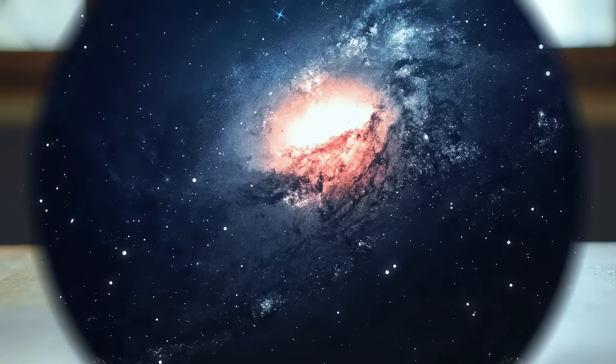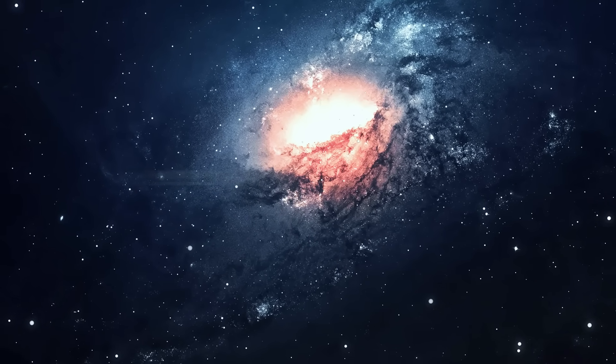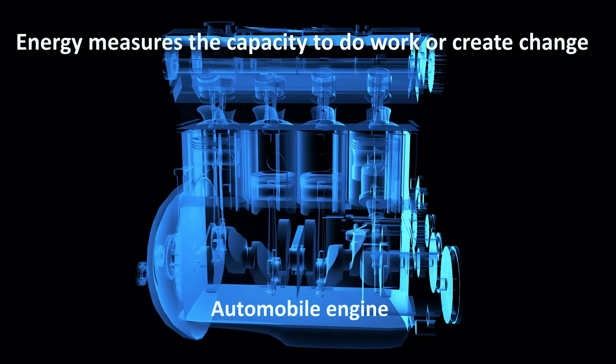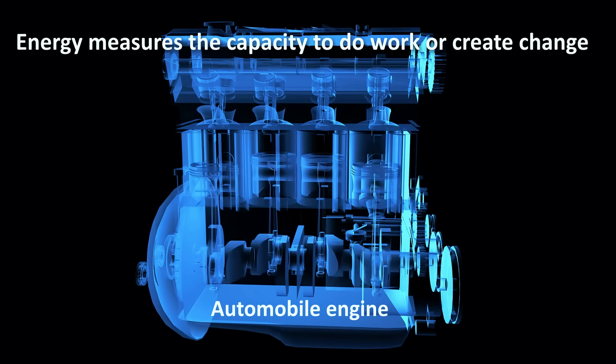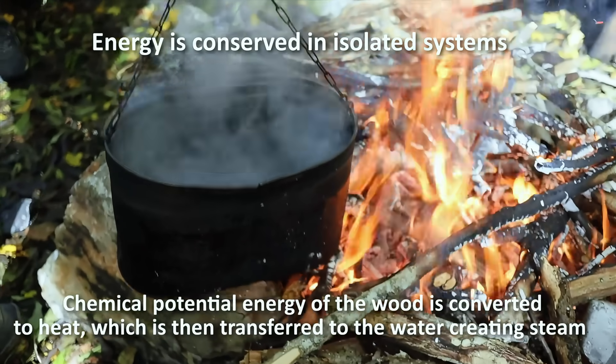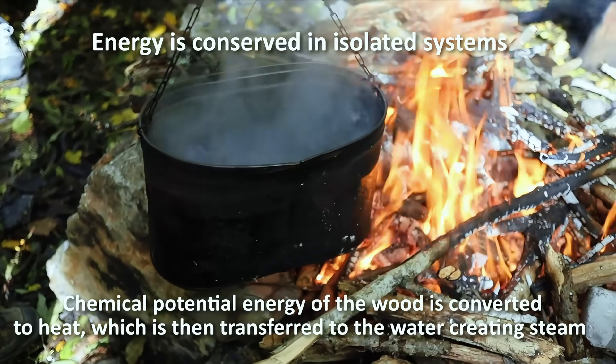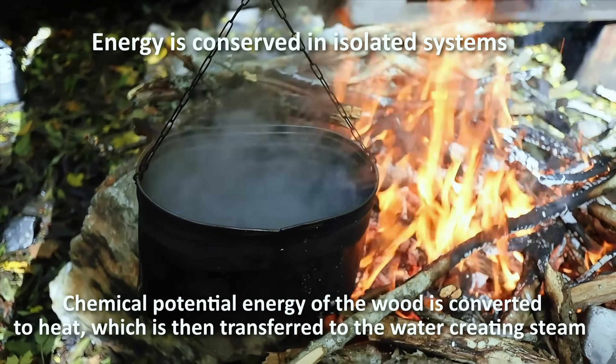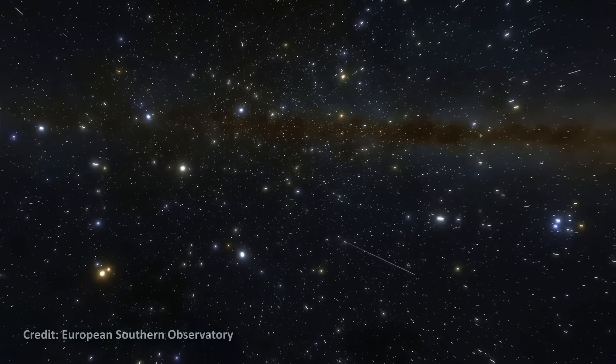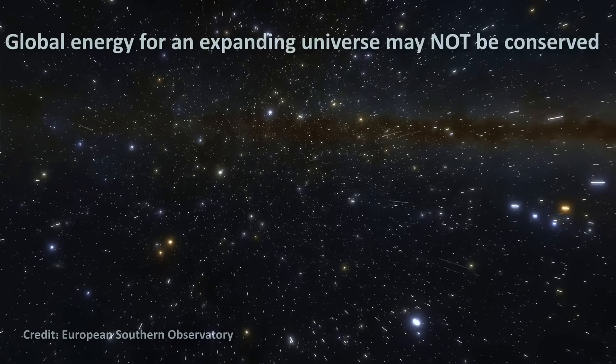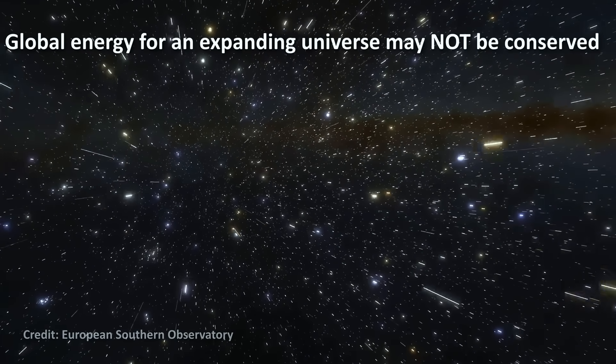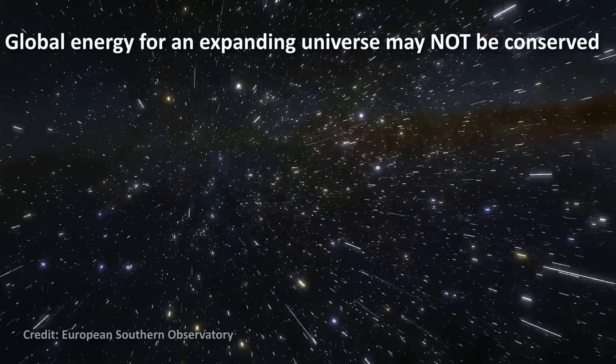The next concept that needs to be explained in our universe are energy, entropy, and the arrow of time. Energy measures the capacity to do work or create change. It moves and transforms. In isolated systems it's conserved, meaning it cannot be created or destroyed, only change form. Keep in mind though, that in general relativity, a simple global energy for the entire expanding universe isn't defined. So this leaves open the possibility that energy may not be conserved for the universe as a whole.